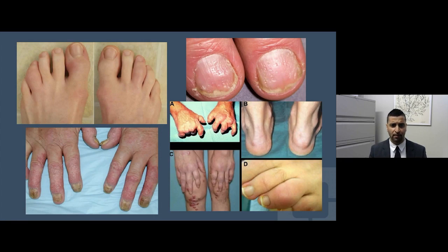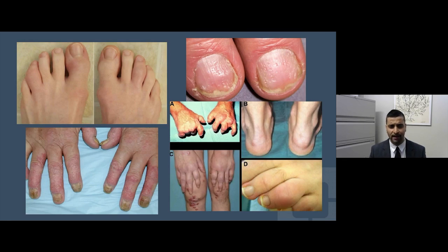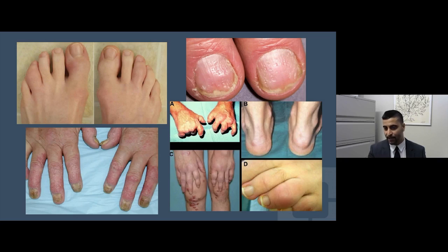These photos show interesting physical exam features in psoriatic arthritis. On the top left, you see what I call a sausage digit or dactylitic toe — a very classic hallmark of psoriatic arthritis. The bottom picture shows separation of the nail from the nail bed, called onycholysis. The top right shows pitting and denting of fingernails, called nail pitting. The bottom right shows an enthesitis at the Achilles tendon, and another dactylitic sausage toe.